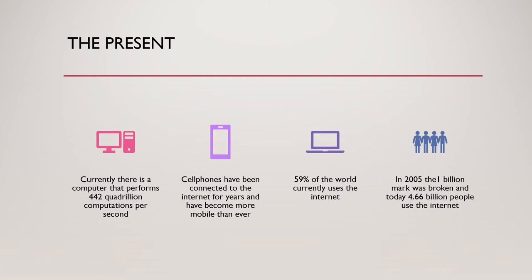In 2005 we broke the 1 billion mark for internet users. Today it's at 4.66 billion. The internet was invented around 1970, and it took 35 years to get to 1 billion — and now we're at 4 billion. This is a classic example of exponential growth and how the internet has really boomed, and to think that's at only 60 percent of the world.